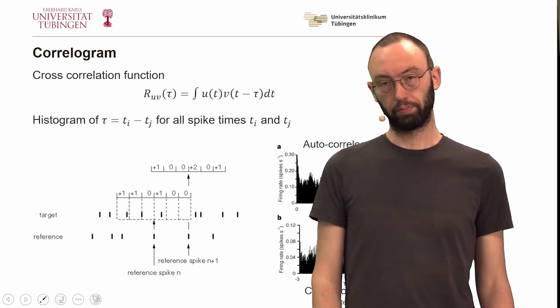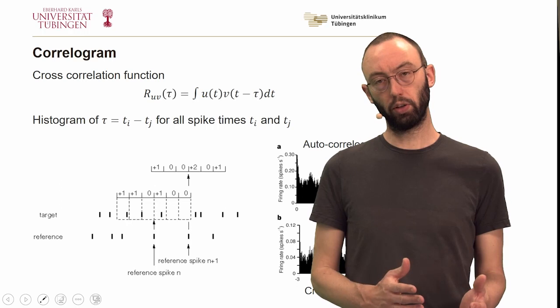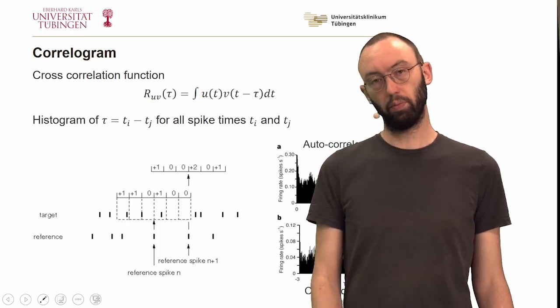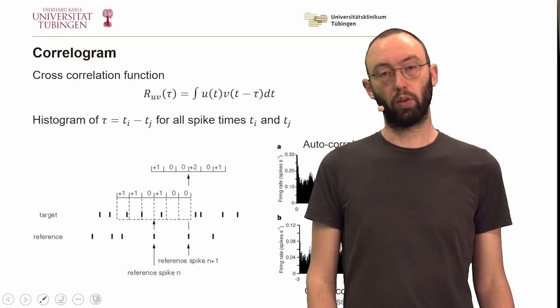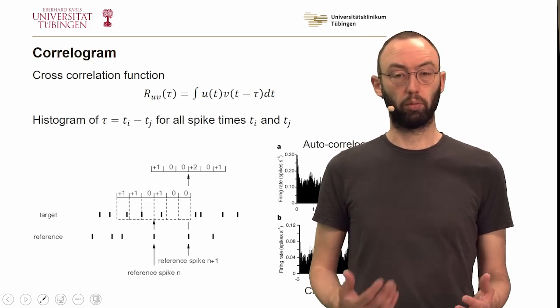If we do that between two neurons, then this is the so-called cross-correlogram, and this can be used, for example, to detect some sort of coupling between neurons.